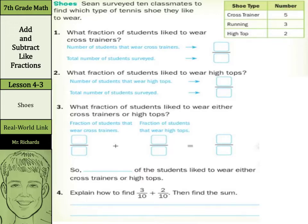Excuse me again. 5 over the total number of students surveyed. Well, that's going to be 5 plus 3 plus 2, which is 10 for our total, so that's going to be 5 over 10. What fraction of students liked to wear high tops? Well, high tops were 2 out of the total 10.